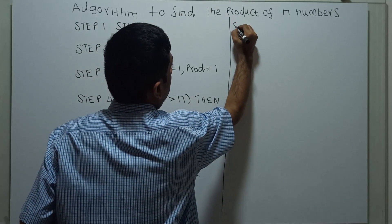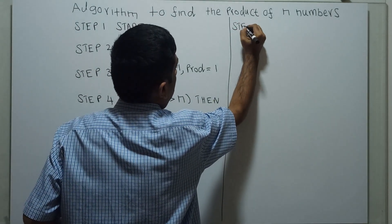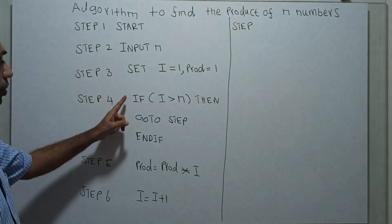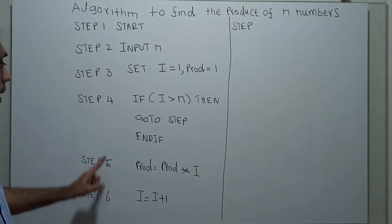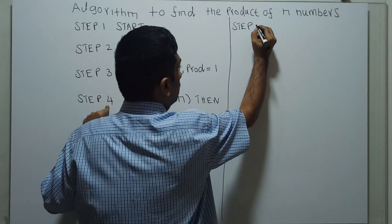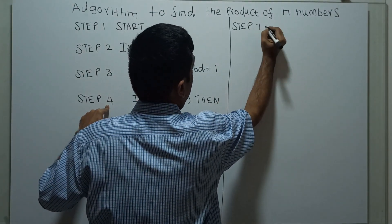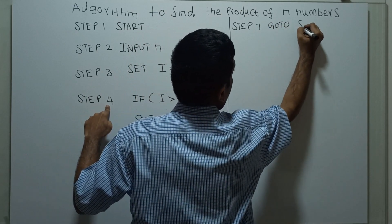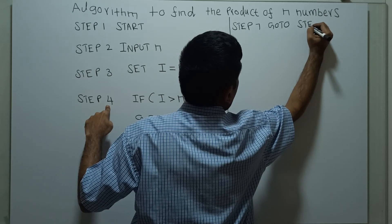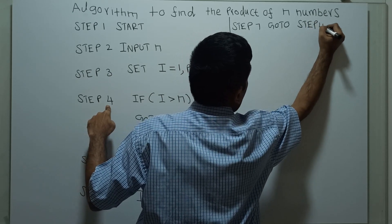Step 7: I am going to loop this statement, so I am transferring control back to Step 4. Go to Step 4.